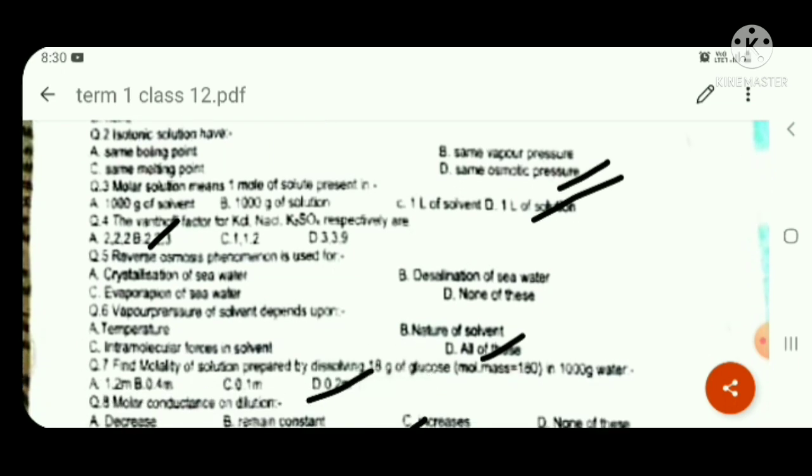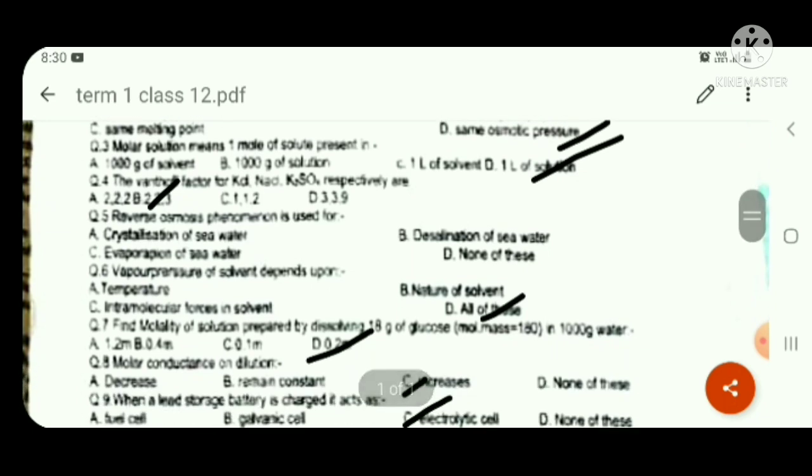Van't Hoff factor for KCl, NaCl, K2SO4 is 2, 2, 3. B option: Reverse osmosis is used for